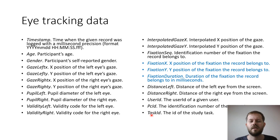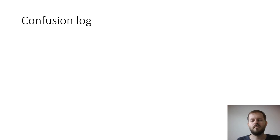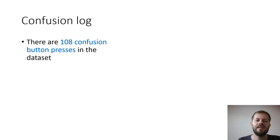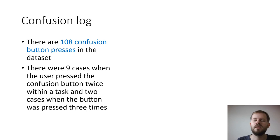This is how eye tracking data and mouse data can be mapped to each other. We also analyzed the confusion log — how users clicked on the confusion button. There were 108 confusion button presses in total. In some cases, participants clicked multiple times within one task — two or three times — and these were not misclicks, as there was a fair amount of time between clicks.